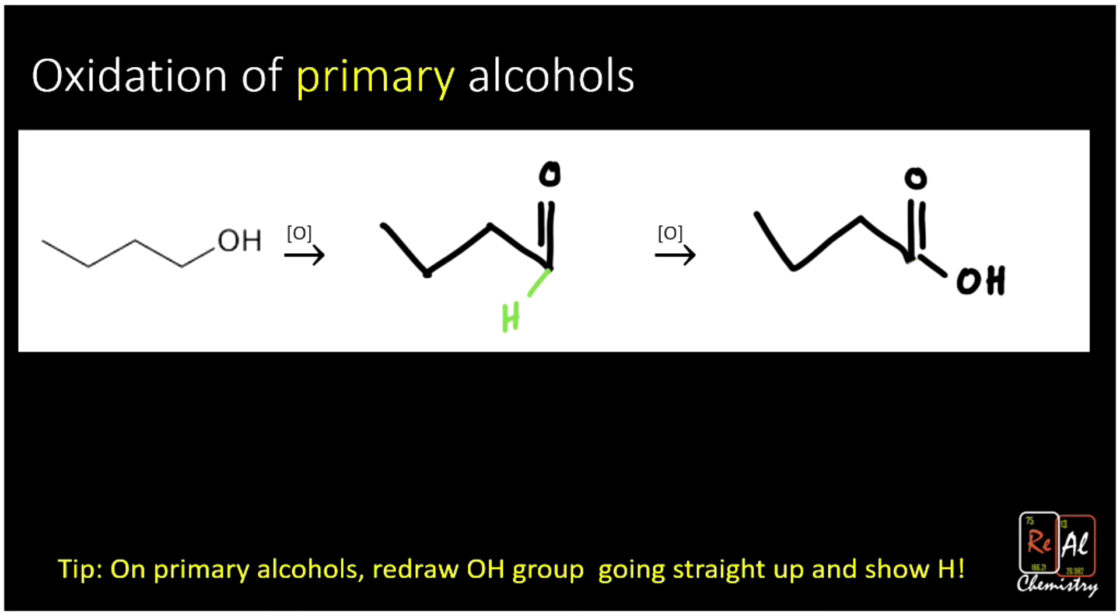And because oxygens need two bonds, we're going to add our H hanging off of it there. Notice now there's zero alpha hydrogens, no more hydrogens on that alpha carbon. And so it can't be oxidized anymore. Like I said, this is the most complicated pattern. So this is the one that's going to take you a little while to get down.